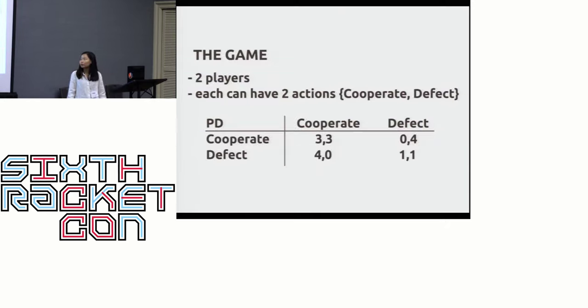So let's start with the game. We have two players, and each can have two possible actions: to cooperate or to defect. If both cooperate, then both get three, and we call this payoff the reward payoff. If both defect, then both get one, and we call this payoff the punishment payoff. If one defect and the other cooperate, then the cooperator get zero, and it's called the sucker's.